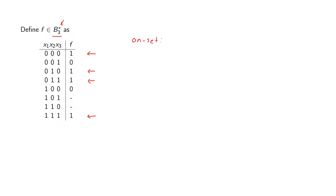So we have the onset, which we define as f inverse of 1, which equals {0, 2, 3, 7}. Each of these will correspond to a vertex that is a 1 in our boolean space, and each of these will also correspond to a min term.